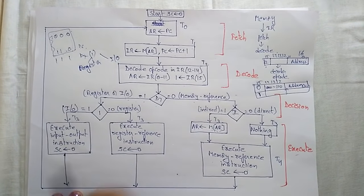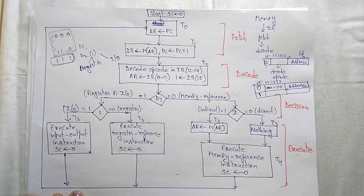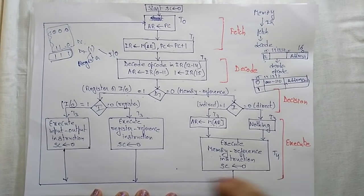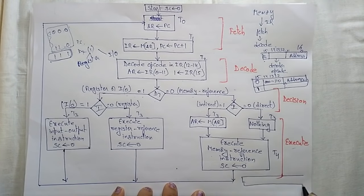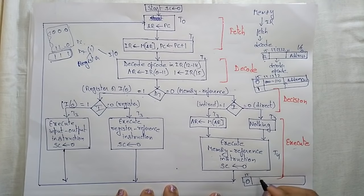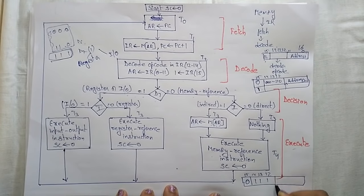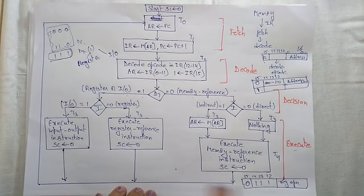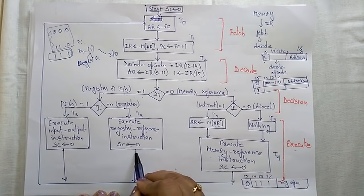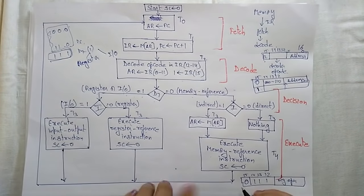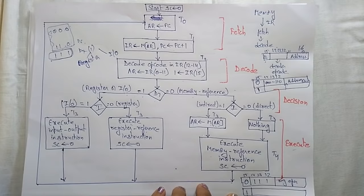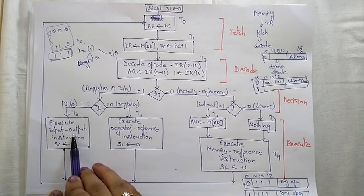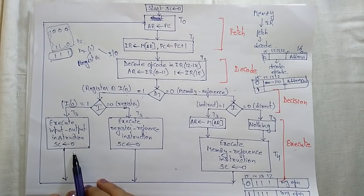For register reference or I/O reference, when D7 is 1: if the 15th bit I is 0, and bits 14, 13, 12 are 1 1 1, and the remaining bits are register operations, then we execute the register reference instruction and make the sequence counter 0. If I is 1 and the opcode is 1 1 1 with register operations in the remaining bits, we execute input/output instructions and make the sequence counter 0, then start the next cycle.